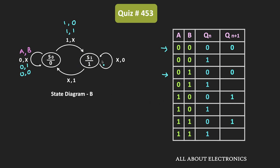Likewise, if the flip-flop is in S1 state — meaning the present output is one — and the input is equal to X0, that is 0,0 or 1,0, then the flip-flop will remain in the same state. Those are these two conditions. And when the input is equal to X1, then it will do a transition from one to zero. That means whenever the input is equal to either 0,1 or 1,1, it will do a transition from S1 to S0, and its output will become zero.